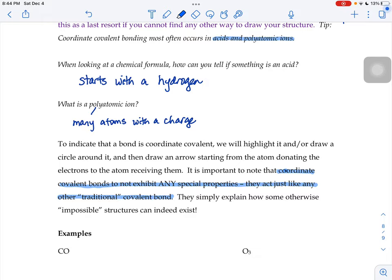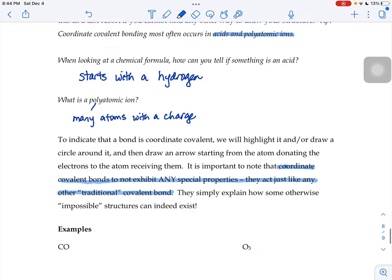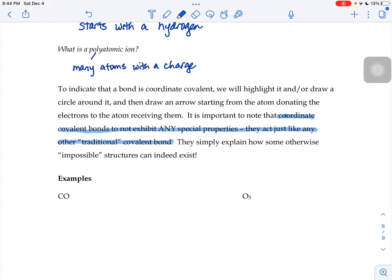The first example we're going to look at that has coordinate covalent bonding is carbon monoxide. We'll draw a carbon and an oxygen. Carbon's in the 4A family, so I'm going to give it four dots. And then oxygen's in the 6A family, so I'm going to give him six dots.